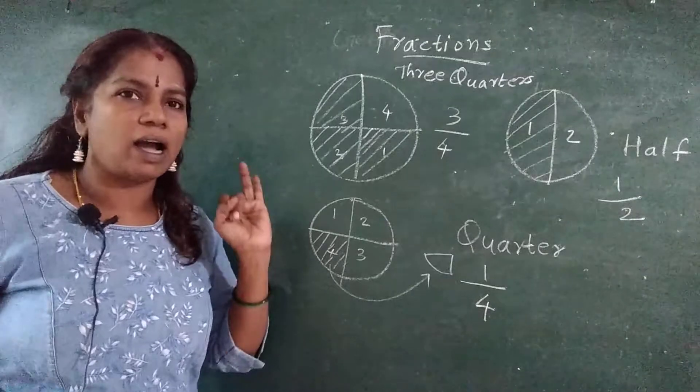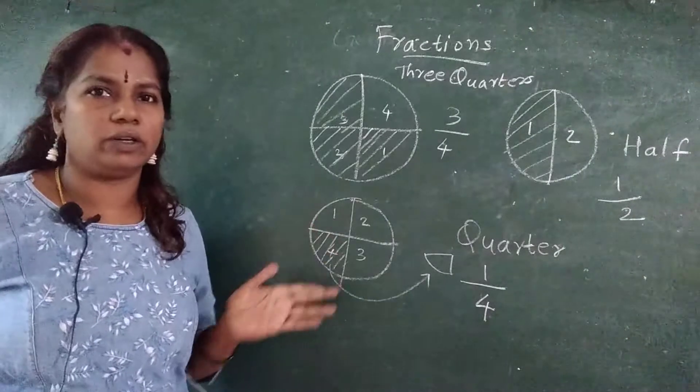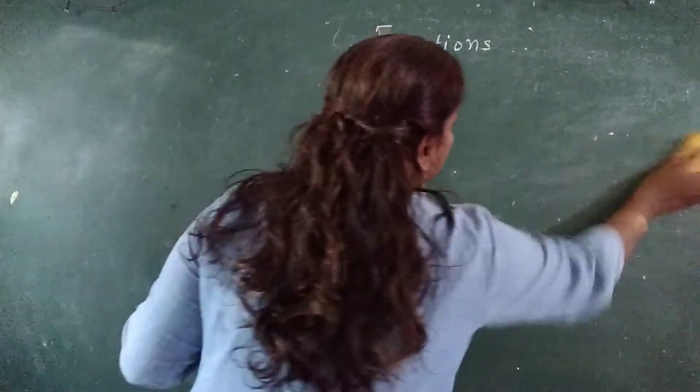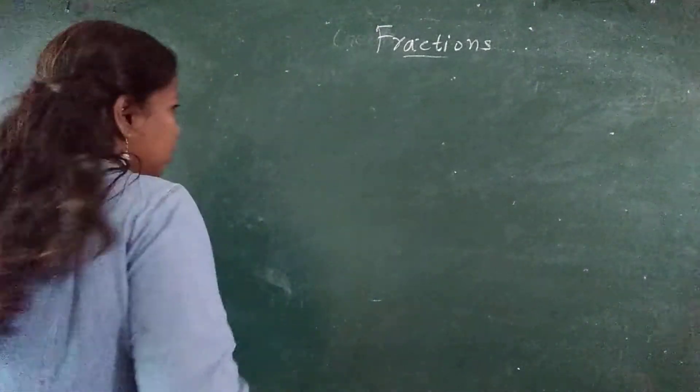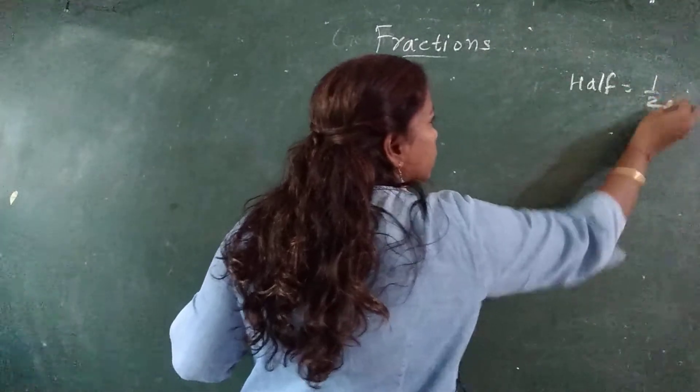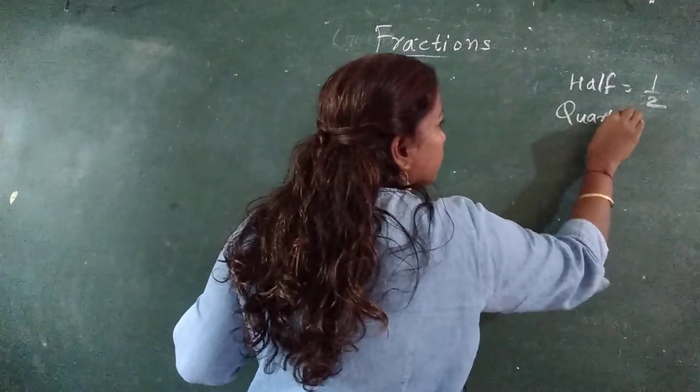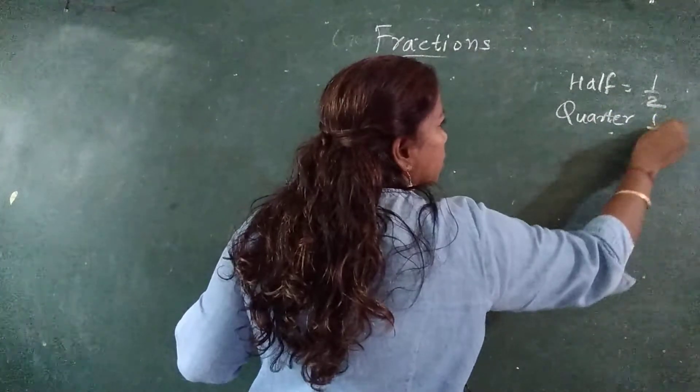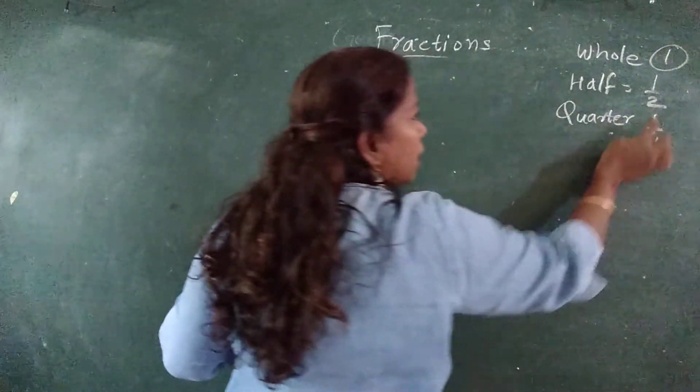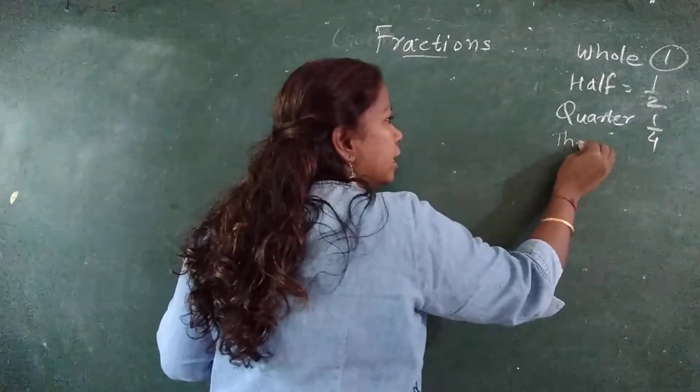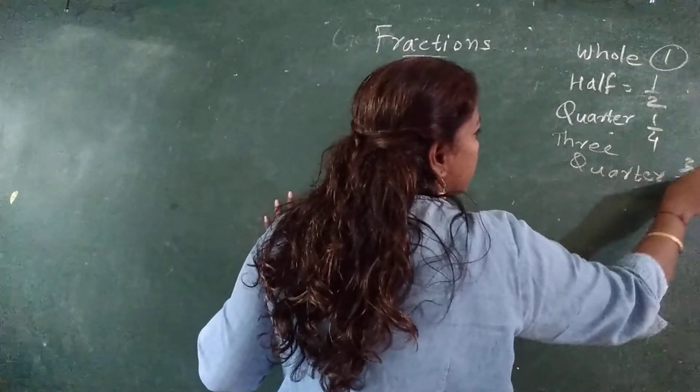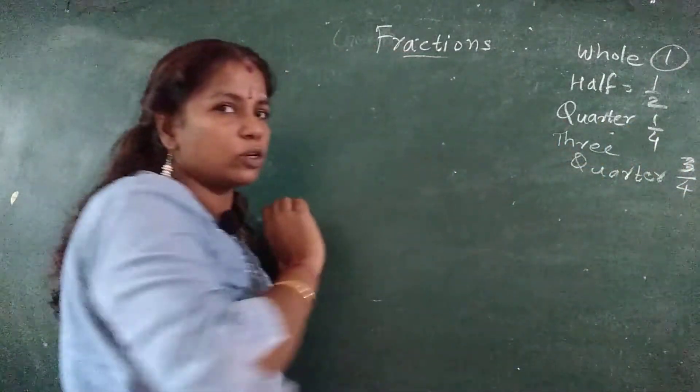Understood? One, half, quarter, three quarters. Very well understood. Now in this fraction, what I told you? Half, quarter. First we started with one, half, quarter, then three quarters. Thorough with this? Very good. No doubt so far?